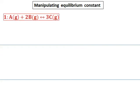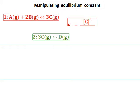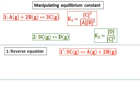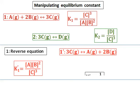Consider two reactions. Reaction 1: A combines with B to give C. Reaction 2: C gives D. The equilibrium constants for both reactions are K1 and K2. Equilibrium constant is products over reactants, with concentrations raised to the power of their stoichiometry. The first manipulation is reversing the equation. If I reverse equation 1, it becomes 3C giving A plus 2B. The equilibrium constant K1-dash is concentration of A times concentration of B squared, divided by concentration of C cubed. Comparing K1-dash with K1, K1-dash is equal to 1 over K1.